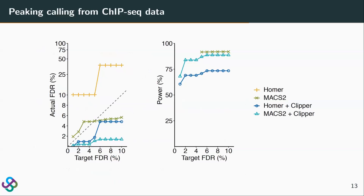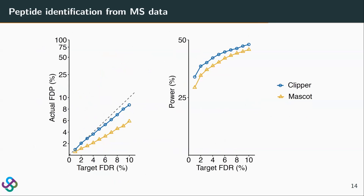For peptide identification from mass spectrometry data, Clipper outperforms Mascot in terms of power while maintaining FDR control.